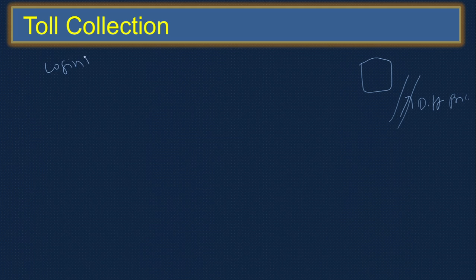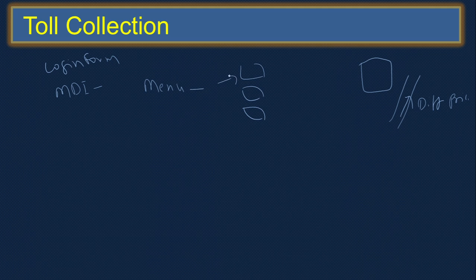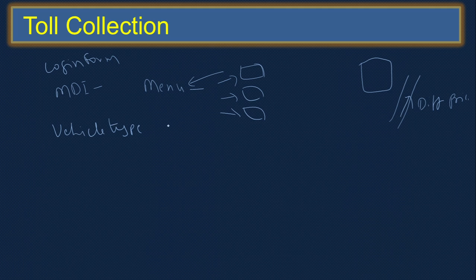The project starts with a splash screen, then a login form, then an MDI form — MDI stands for Multiple Document Interface — and you can have a menu strip there. Via the menu you can navigate to the rest of the forms. Here is the vehicle type form: what are the different vehicle types and the corresponding price to collect.